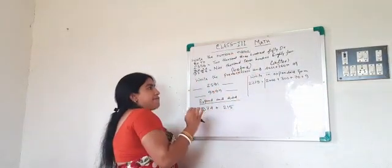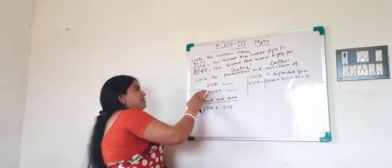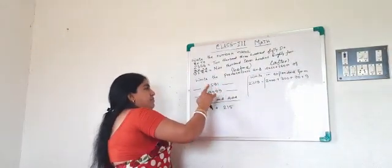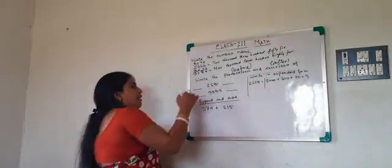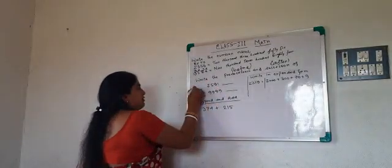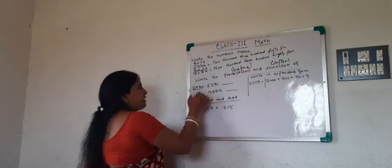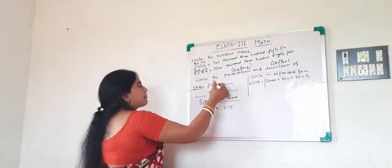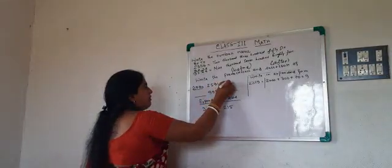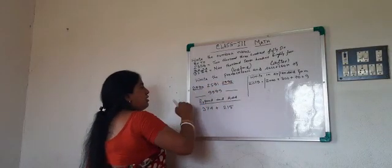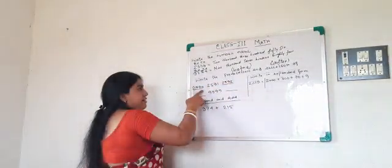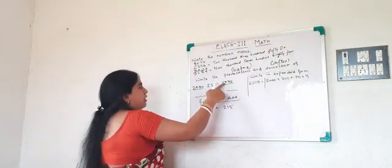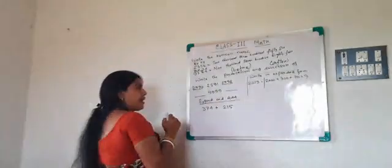It's just like before and after digits. Its predecessor is 2591. Just subtract 1 from the given number. That is 2590. It just comes before this number. And after is 2591 and 2592.